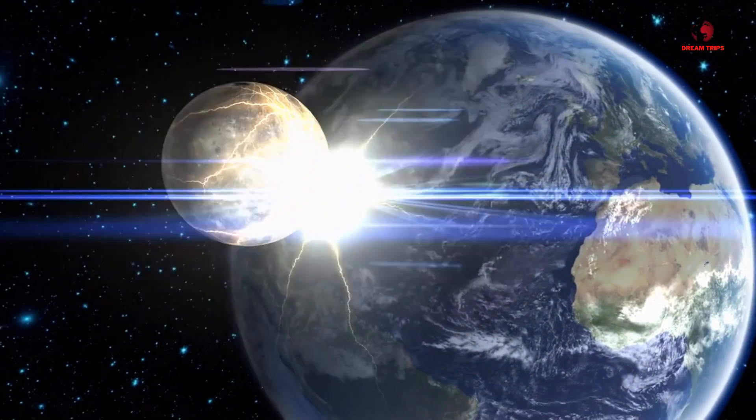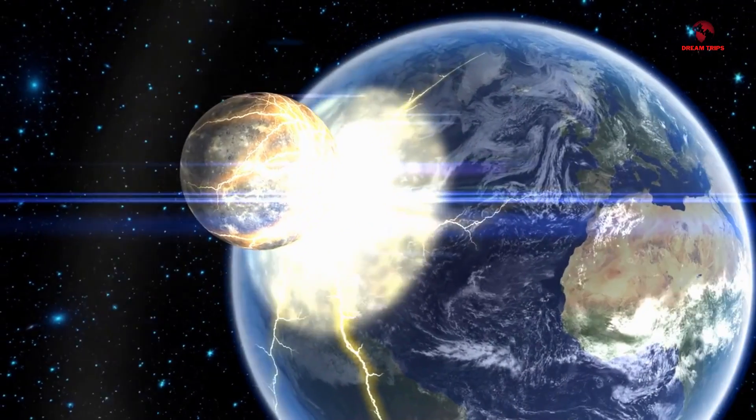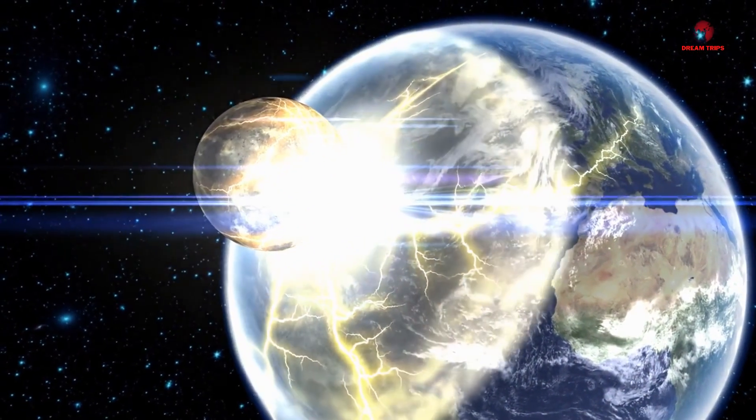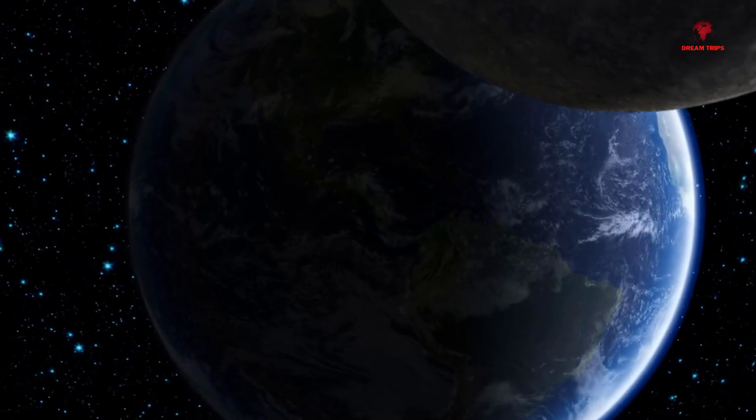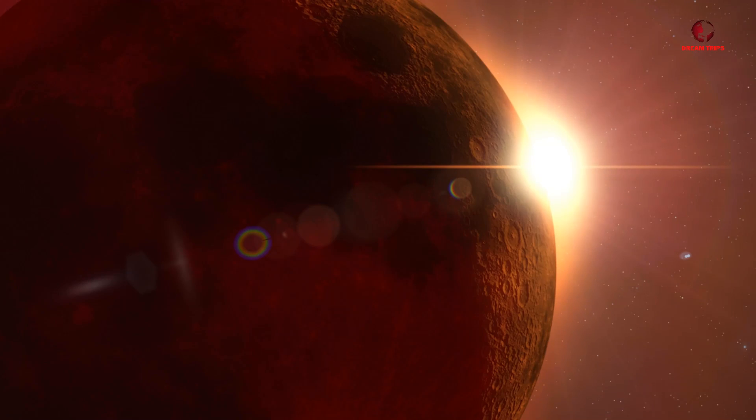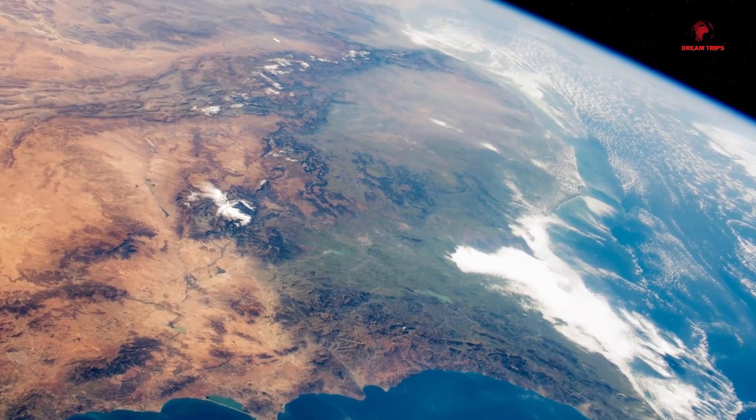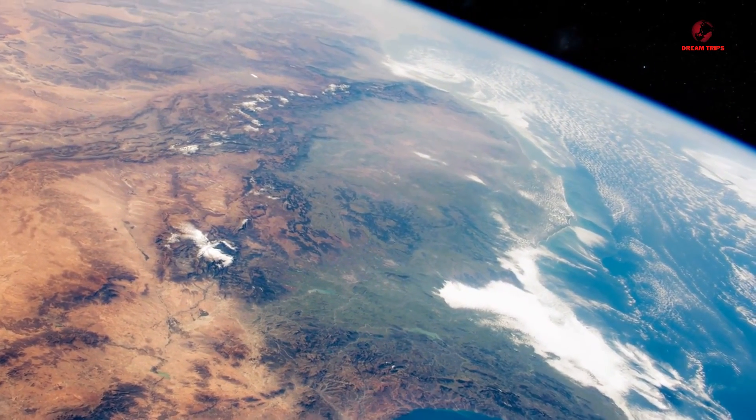Transitioning to the fate of these stellar giants, the life cycle of stars is a narrative of cosmic birth, life and death. Stars are born in nebulae, vast clouds of gas and dust. Under the force of gravity, these clouds collapse, forming protostars that eventually ignite nuclear fusion in their cores. The Sun, a middle-aged star, will continue to fuse hydrogen into helium for about 5 billion more years. As it exhausts its hydrogen fuel, it will expand into a red giant, engulfing the inner planets, including Earth.